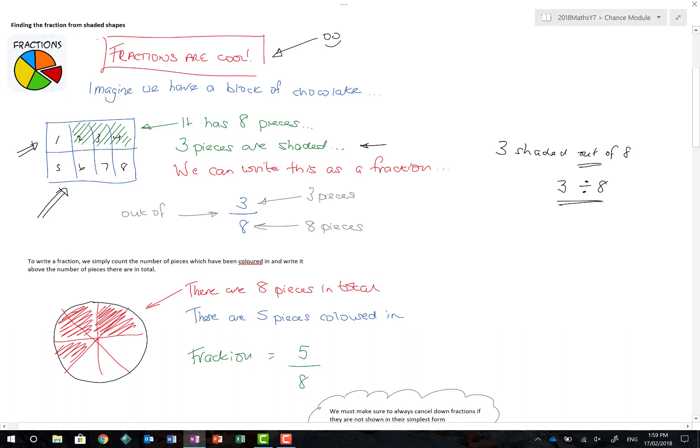Maths is full of shortcuts and tricks. I now know that the words 'out of' generally means divided by. So I have three shaded pieces out of divided by eight. We can write that in a far better way, and that is, in fact, three over eight.